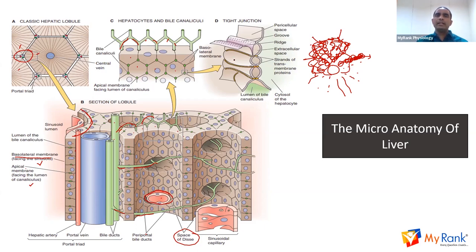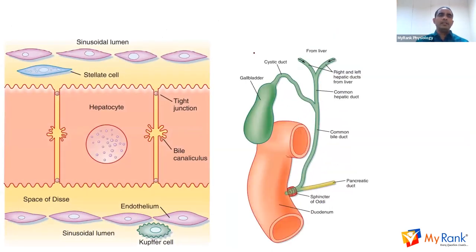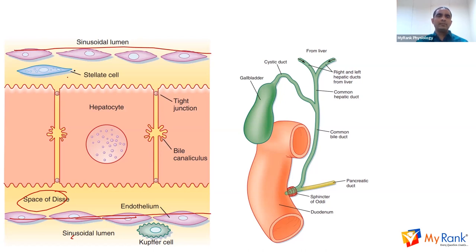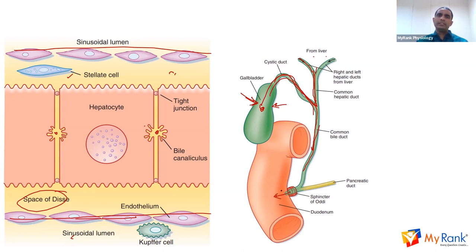Looking further at the hepatocyte detail: one hepatocyte on this side, the other side — tight junctions keep them in place. The space of Disse is the space between the sinusoidal lumen and the hepatocyte. The sinusoid is essentially a capillary, with endothelial walls, stellate cells, and macrophages nearby. Between adjacent hepatocytes, bile canaliculi are like tiny slits. The right and left hepatic ducts come together and join the cystic duct from the gallbladder, then form the common bile duct. When the liver wants to send bile, it goes through here and gets stored. When the signal comes — cholecystokinin — the gallbladder contracts and empties its contents through the common bile duct into the second part of the duodenum.